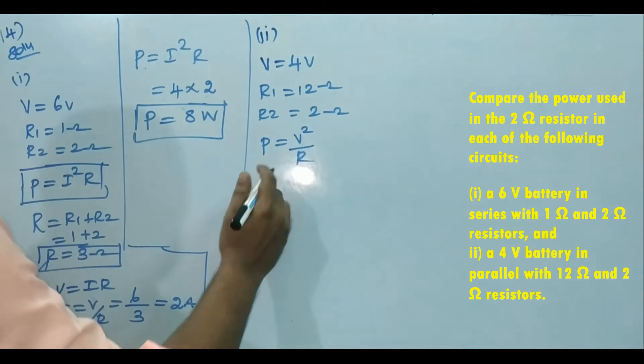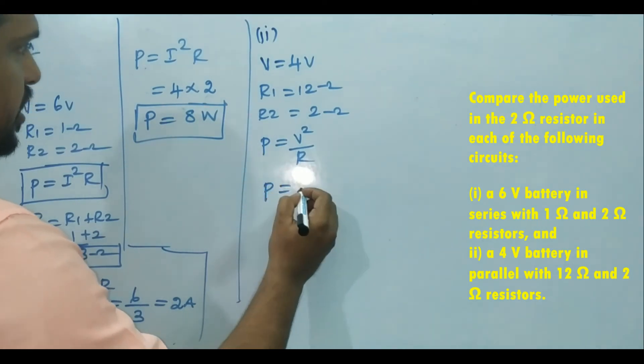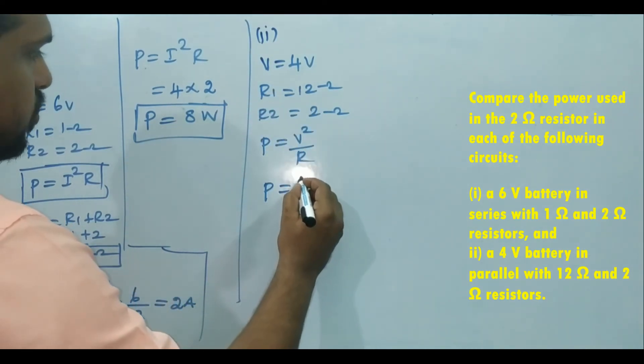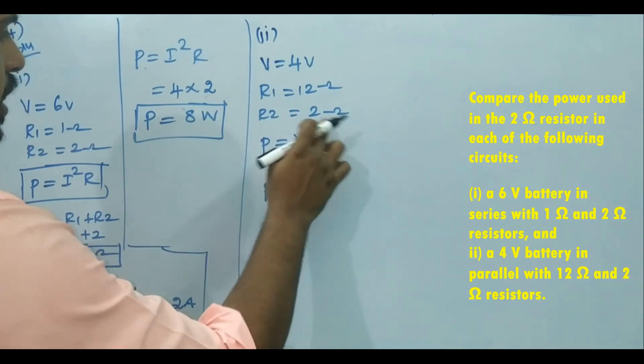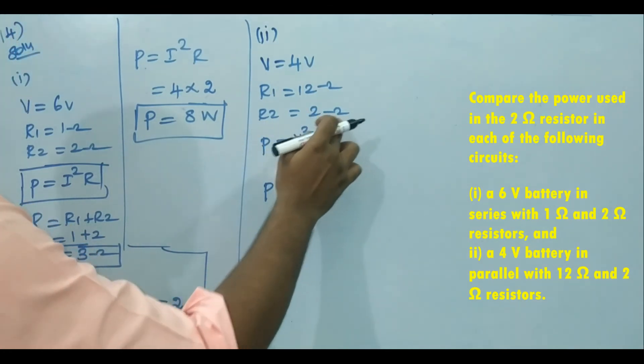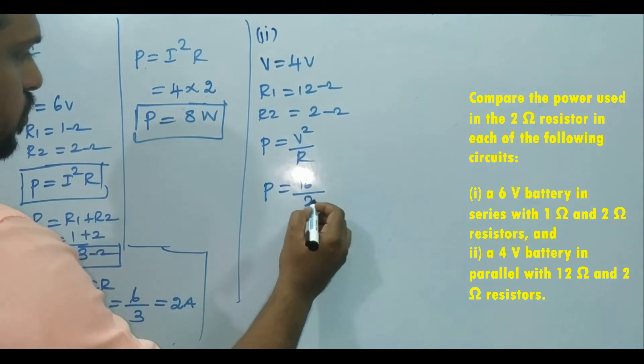Then P is equal to V is 4, V squared is 16, R is 2 ohm. They're asking about what is the power in the 2 ohm resistance, so R is 2, and it becomes 8. So power in parallel is 8 watt.